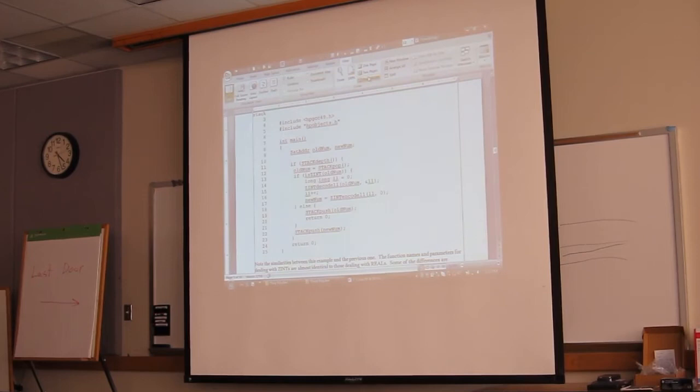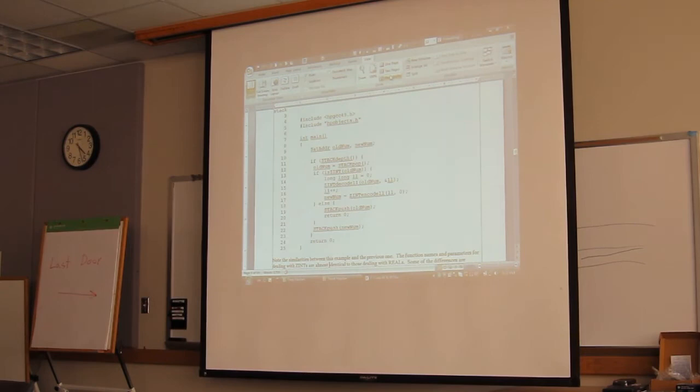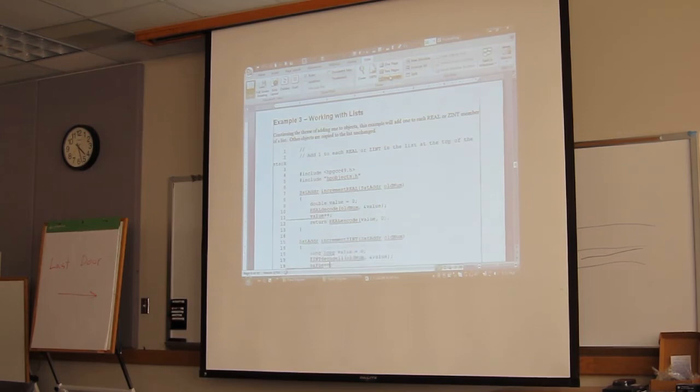So here's the second example. Same sort of idea as the first one, but now it's taking an integer instead of a real number. And the thing that you should notice of this is that the code is almost identical. The only things that have changed are the functions that used to have the word real in them now have zeant in them. Zeant just being the name for an infinite precision integer.